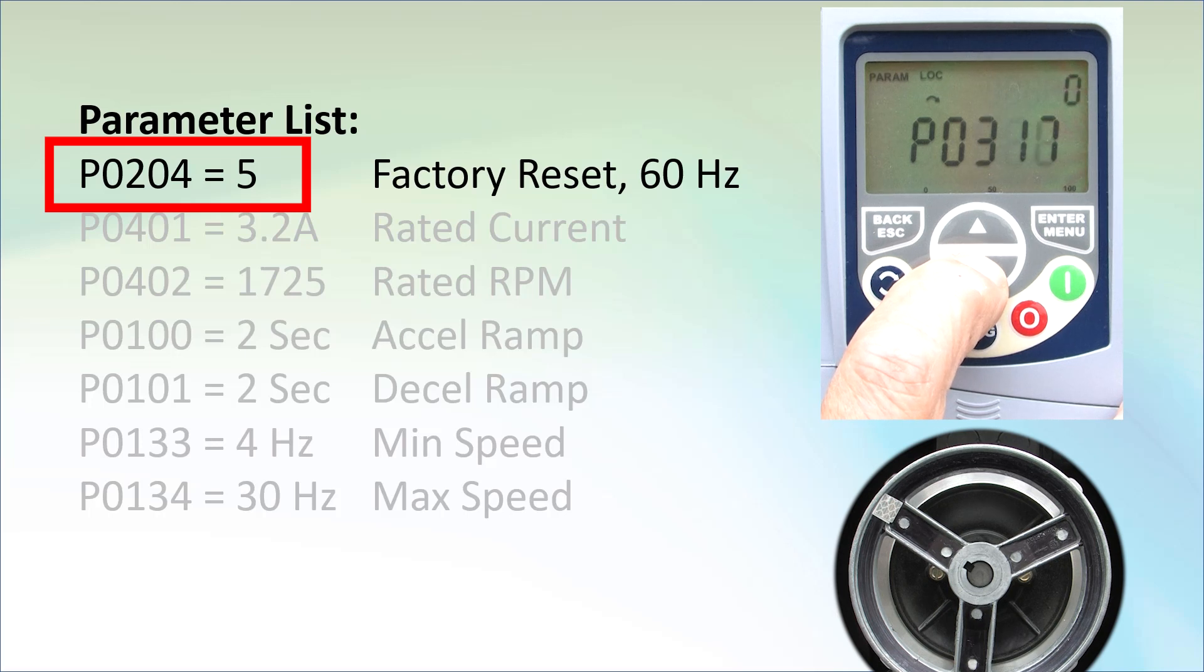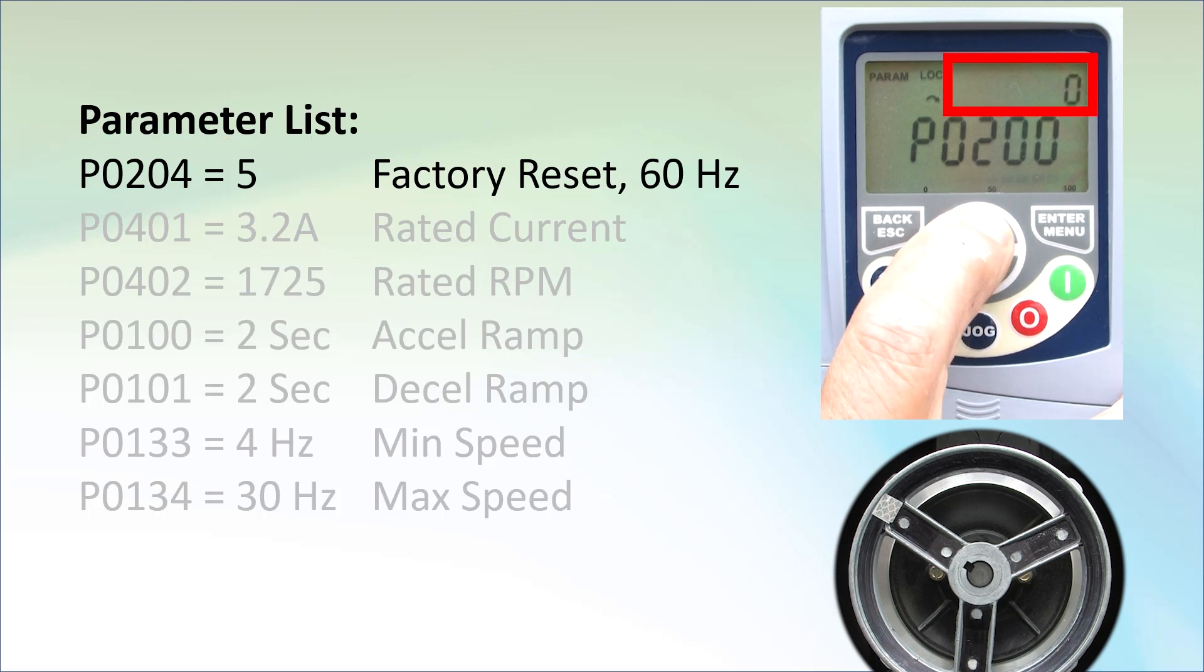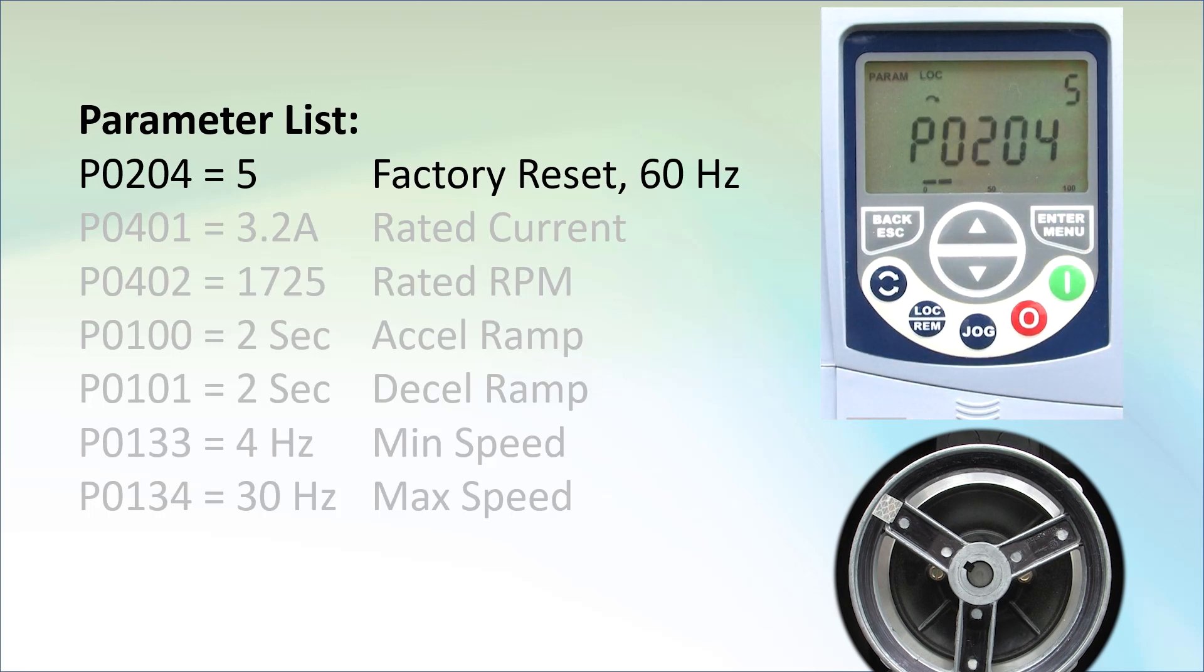Scroll to parameter 204. The value of each parameter is displayed up here which makes it super quick and easy to see what's in each parameter. Press enter and change it to a 5 to reset the drive to 60Hz operation. The bar graph shows you the progress and when it's done, the drive restarts.